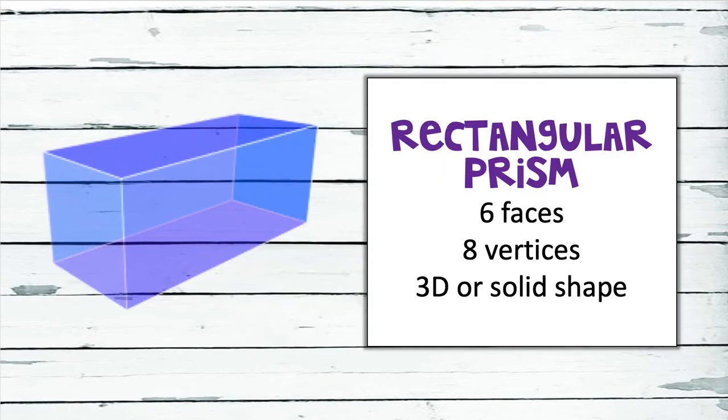We can describe 3D shapes too, but some of our words change. We call the sides of 3D shapes faces — this is where our hands would sit on the shape to hold it. This shape is a rectangular prism. What math words could you use to describe it? Pause the video to think about it now. This shape is a rectangular prism. It has six faces: two are in the shape of a square, while the rest — three, four, five, and the back one, six — are all in the shape of rectangles. It has eight vertices and is a three-dimensional or solid shape.